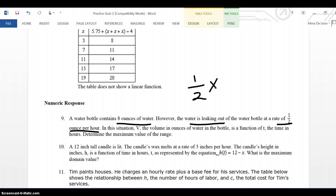In this situation, V, the volume in ounces of water in the bottle is a function of T. So I'm working with V, which is for volume, and T, for time. And I'm looking for the maximum value in the range.